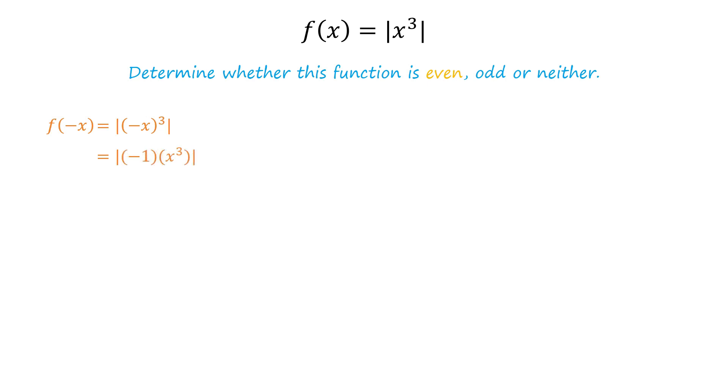We can write negative x cube as the product of negative 1 and x cube. For any two real numbers a and b, we have modulus of a times b equals the product of modulus of a and modulus of b. So we can write f of negative x equals the product of modulus of negative 1 and modulus of x cube.